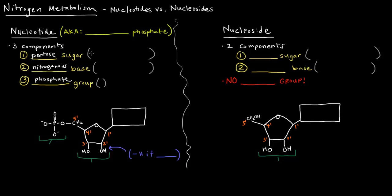The pentose sugar can either be ribose or deoxyribose. The nitrogenous base is either a purine or a pyrimidine. With the phosphate group, we can have one, two, or three phosphates.